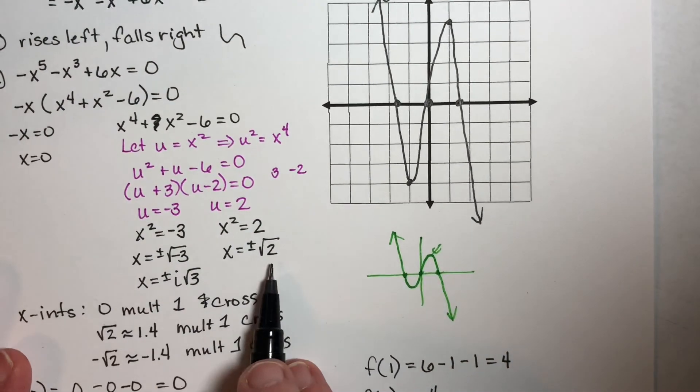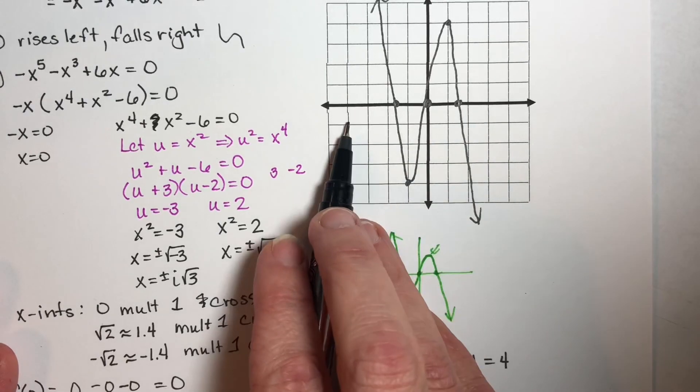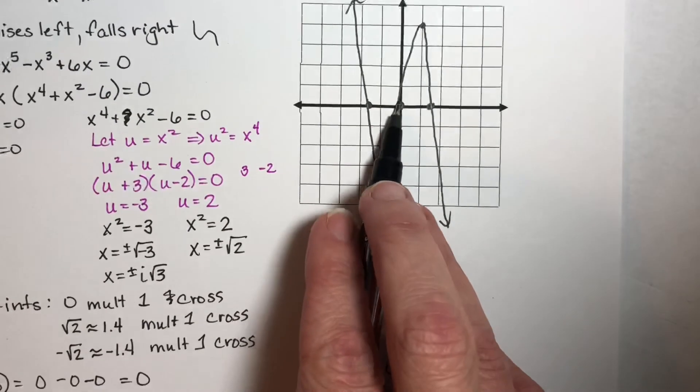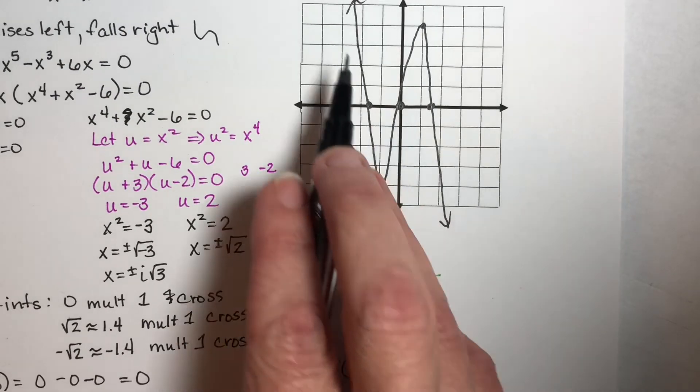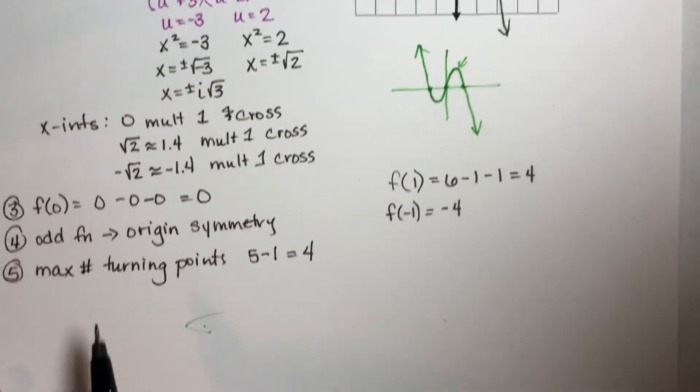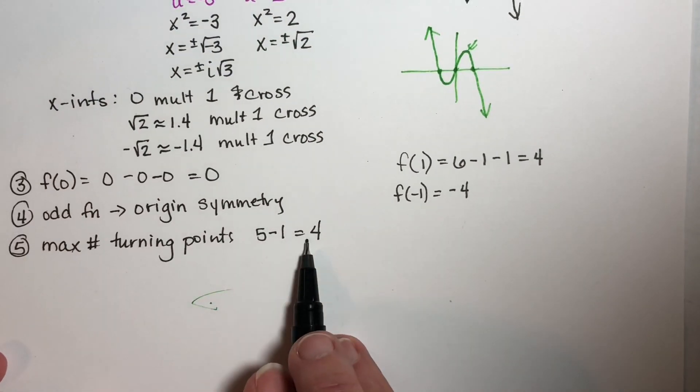We found our x-intercepts, and we knew that we crossed at each one. Our y-intercept was the origin. We knew it had origin symmetry, and that happened.